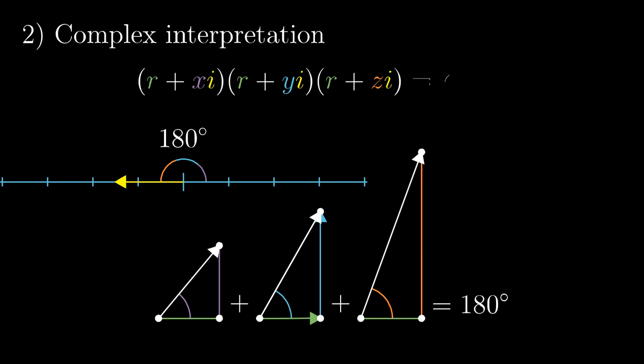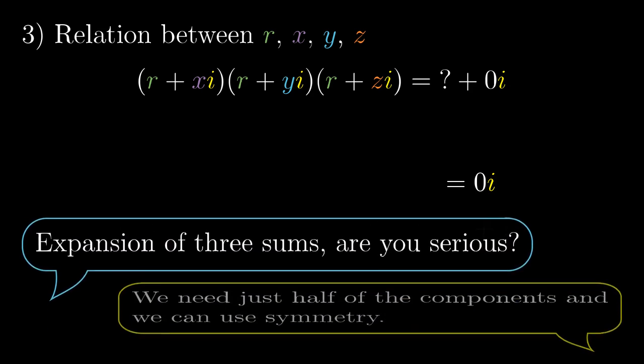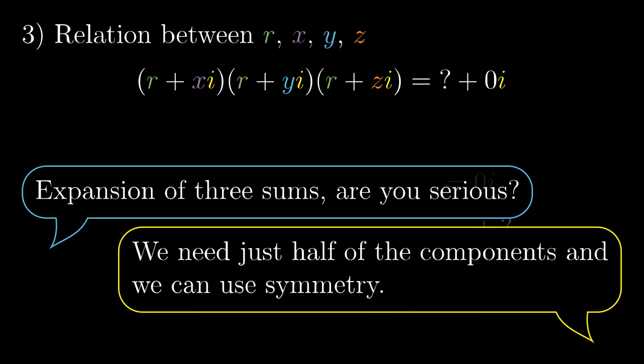In other words, it's a complex number of form something plus zero i. We don't care about the question mark, but the zero near i is exactly what we are going to build on. It tells us that after the expansion of the formula, the coefficient near i has to be zero. So let's expand it and follow the coefficient near i. It will be simpler than it looks at first glance.